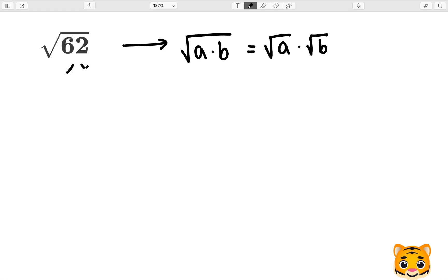If we do this with 62, we can first think about the factors that make up 62, which are 31 and 2. The square root of 62 then would be the same as the square root of 31 times 2. Now we can break that up into the square root of 31 times the square root of 2.